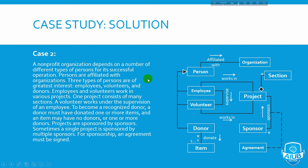Case 2. Persons are affiliated with an organization — this is an association relationship. There are three types of persons: employees, volunteers, and donors. This is a generalization by inheritance, where Person is the parent class and employees, volunteers, and donors are the child classes.